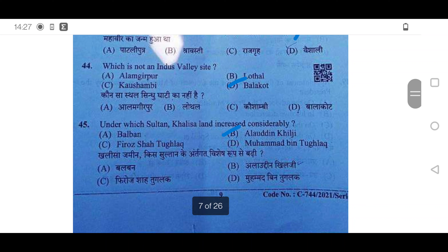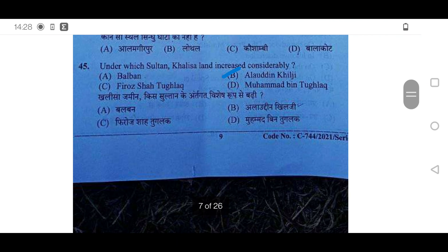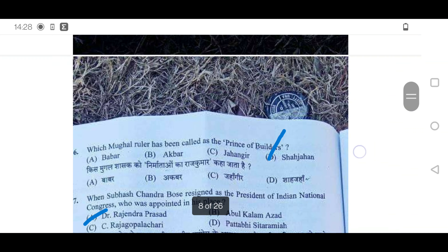44th: Which of the following is not an Indus Valley site? It is Bala court — option D will be correct; it was a Harappan Valley site. 45th: Under which Sultan did Khalsa land increase considerably? It was Alauddin Khilji — option B will be correct.